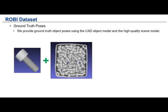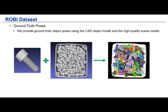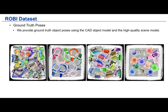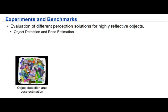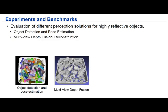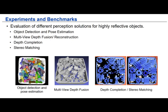Given the CAD model and the scene mesh, we can label the ground truth object poses for each object in the bins. Here are some examples of the labeled object poses. Our Robi dataset can be used for evaluating different robot perception solutions for reflective objects. We are able to evaluate different algorithms for object detection and 6D pose estimation. Because we also have the ground truth depth maps, we can evaluate multi-view depth fusion and other depth-related tasks like depth completion and stereo matching. In this paper, we evaluated several algorithms and provide a benchmark for object pose estimation and multi-view depth fusion.